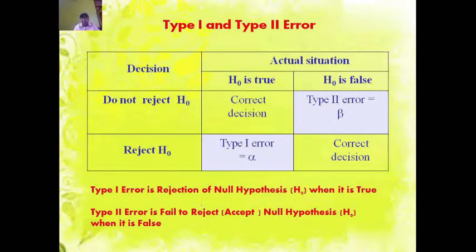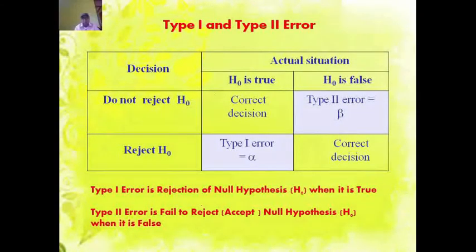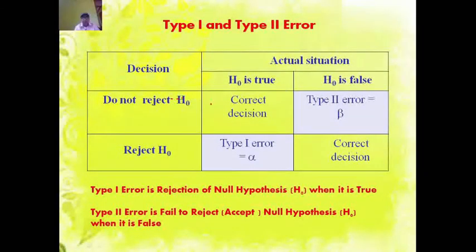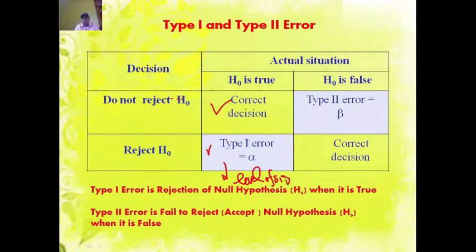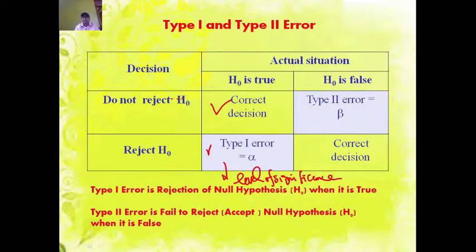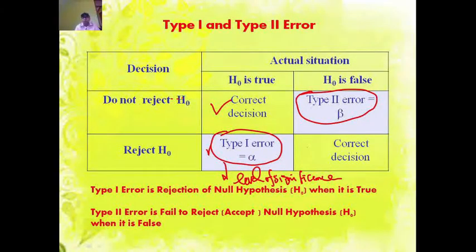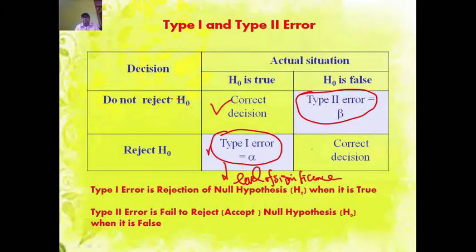You can see in the table: when the null hypothesis is true and we do not reject it, this is the correct decision. When the null hypothesis is true and we reject it, this is Type 1 error, or level of significance, or alpha error. When the null hypothesis is false and we fail to reject or accept it, this is Type 2 error, also called beta error. When the null hypothesis is false and we reject it, this is the correct decision.